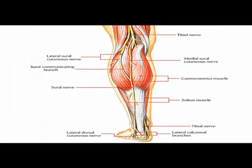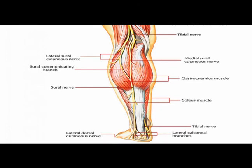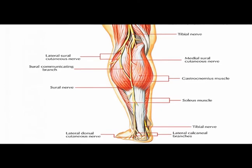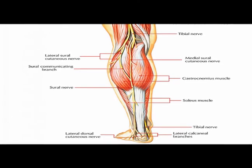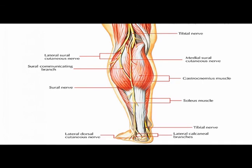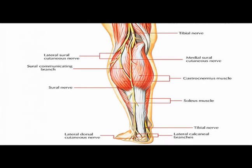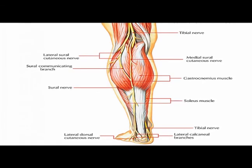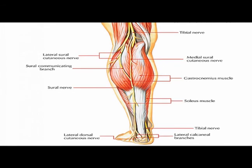Again, the tibial nerve is one of the two terminal branches of the sciatic nerve. About two centimeters superior to the popliteal fossa, the sciatic nerve bifurcates into the common peroneal nerve and the tibial nerve.